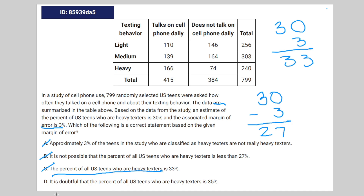Finally, we have answer D: it is doubtful that the percent of all U.S. teens who are heavy texters is 35%. With the margin of error, the estimate can only really go up to 33%. For it to go all the way up to 35% is kind of unlikely — one could say doubtful. Therefore, D is the correct answer.